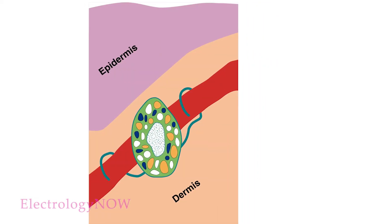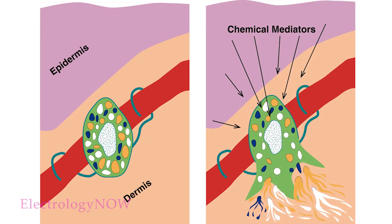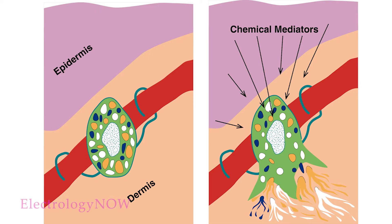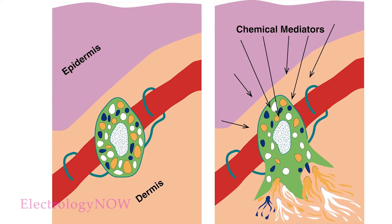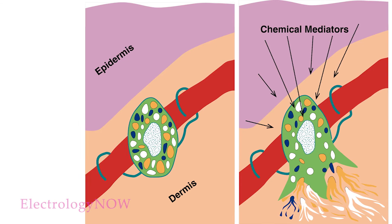It takes very little skin damage to set off the mast cells and the healing process. Even minor irritation to the skin can cause a release of mediators from the epidermis that cause mast cells to then release their own mediators — a virtual chemical cocktail. In this drawing, notice the mast cell breaking apart and releasing mediators into the skin.